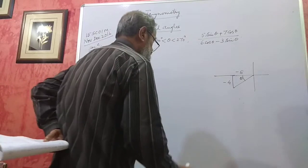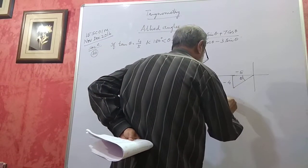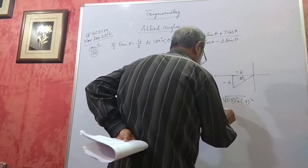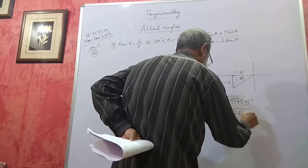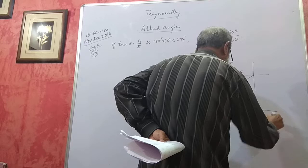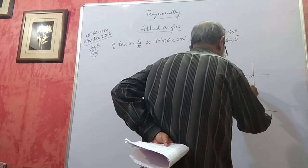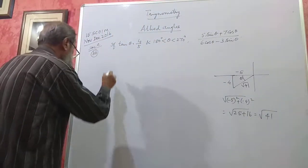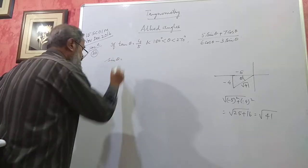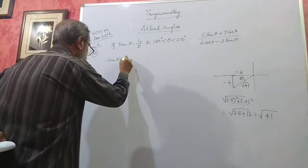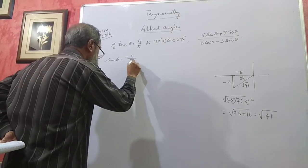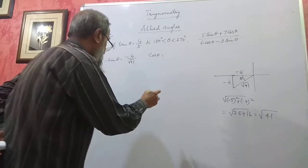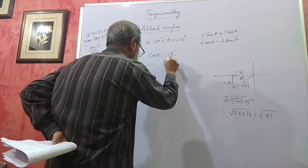The hypotenuse will be √((−5)² + (−4)²) = √(25 + 16) = √41. So sin θ = opposite/hypotenuse = −4/√41, and cos θ = adjacent/hypotenuse = −5/√41. Keep them like that only. Now make a substitution.